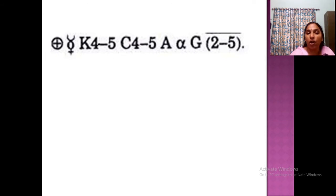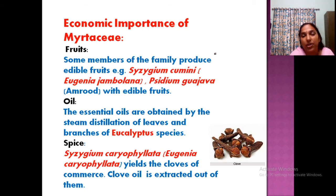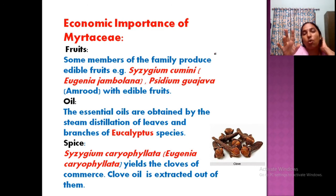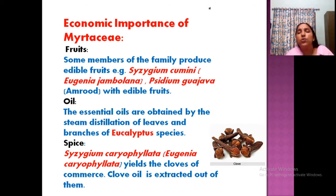The floral formula is: K 4-5, C 4-5, A ∞, G 2-5. The important characters to remember are: numerous stamens; receptacle forming a special cup-like structure (hypanthium); calyx usually thrown off as a lid in eucalyptus; ovary may be half-inferior or superior; fruits usually berry. Examples include Syzygium cumini (eugenia jambolana), Psidium guajava (pereka), and amrud. Many fruits are edible.